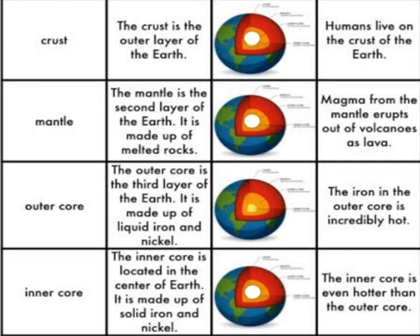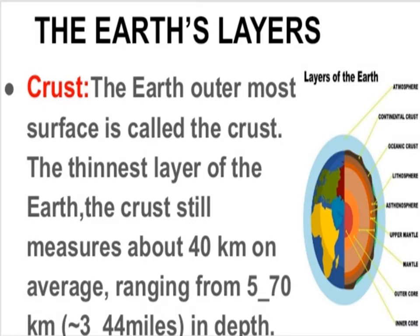The outer core is made up of liquid iron and nickel; the iron in the outer core is incredibly hot. The inner core is located in the center of the Earth and is made up of solid iron and nickel. The inner core is even hotter than the outer core.